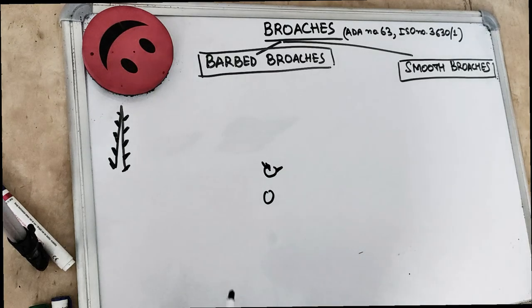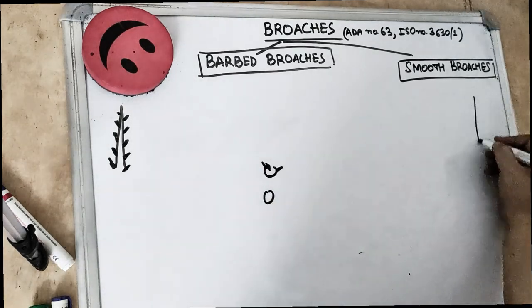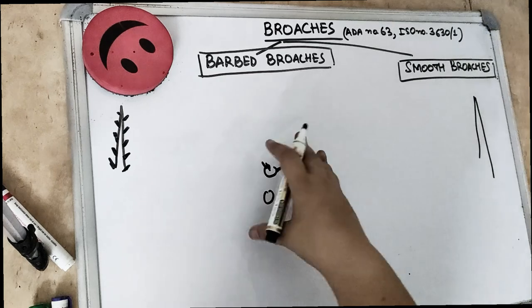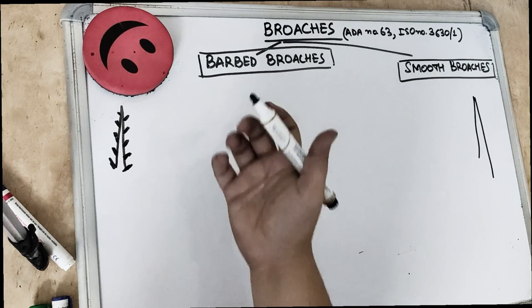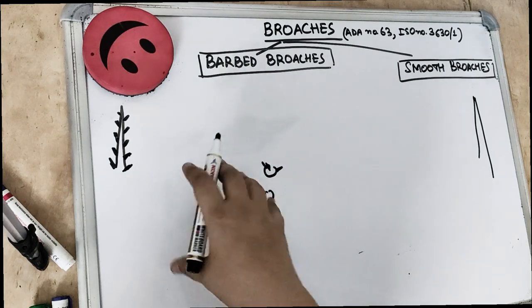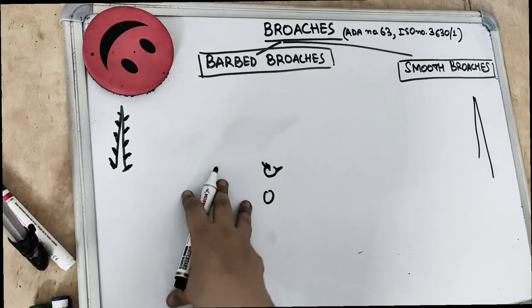Now barbed, there are two kinds of broaches. One are the barbed broaches and one are the smooth broaches. So the barbed broaches are short angled and they are used for extirpating the pulp. They are used for taking the pulp out and loosening the debris in case of a necrotic canal.